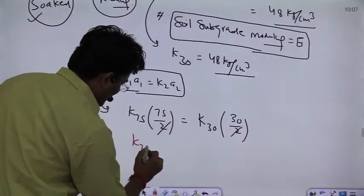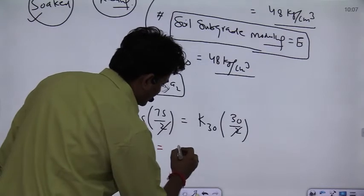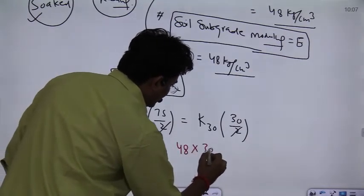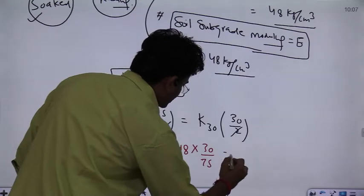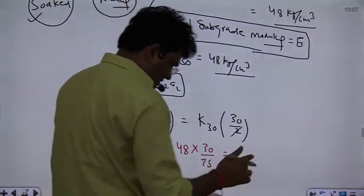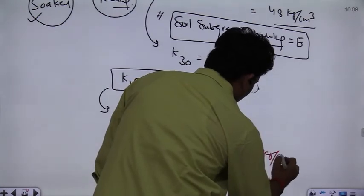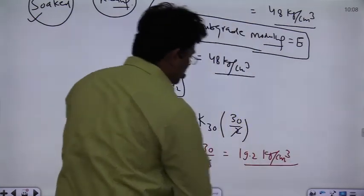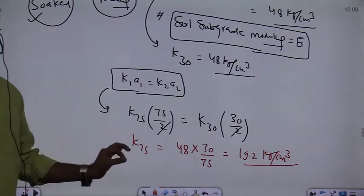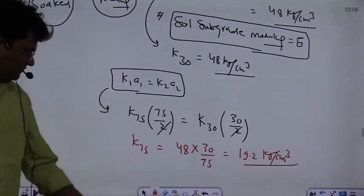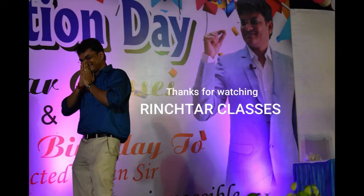k₇₅ is equal to k₃₀, that is 48, multiplied by 30 divided by 75. So the result is 19.2 kg per cm³. This is the result for the standard subgrade reaction. Okay?